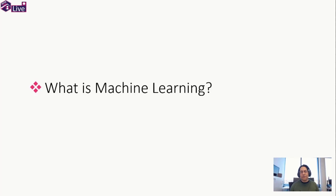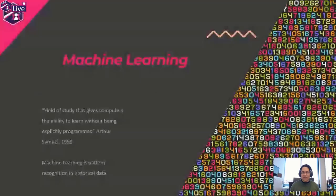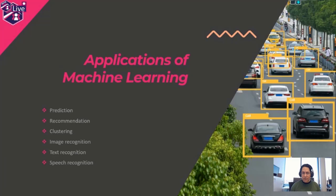What is machine learning? You might think machine learning is something new because it's quite a hot topic today, but it's been around since the late 1950s. A researcher called Arthur Samuel said that machine learning is a field of study that gives computers the ability to learn without being explicitly programmed. You can also say that machine learning is pattern recognition in historical data.